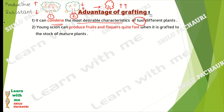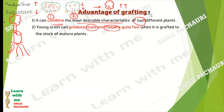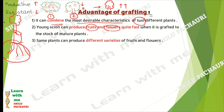The second advantage is that a young scion can produce fruits and flowers much faster when grafted onto the stock of a matured plant, because the matured stock has well-developed roots that can absorb more minerals and water. The third advantage is that some plants can produce different varieties of fruits and flowers through grafting.